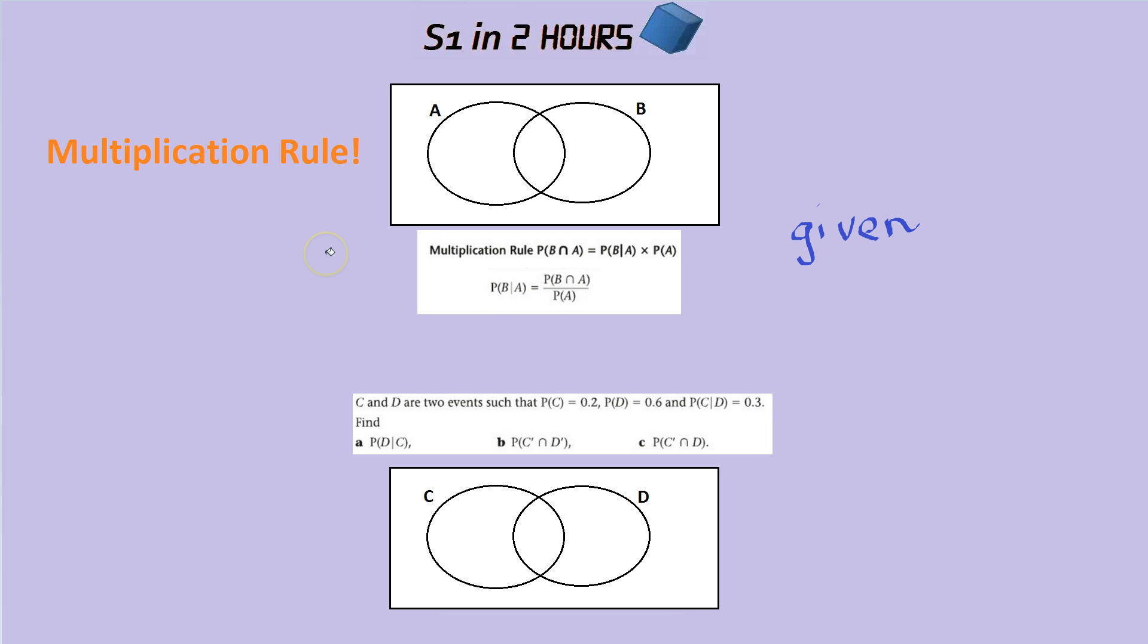Okay, let's answer a question now that we know that. Now, C and D are two events such that the probability of C is 0.2, and the probability of D is 0.6. The probability of C given D is 0.3.